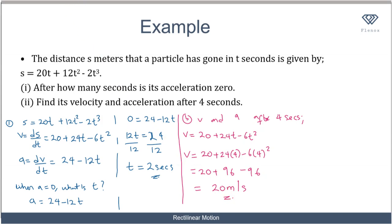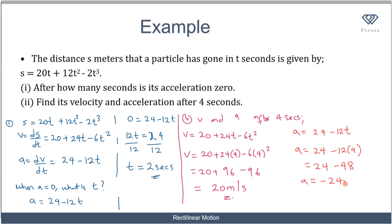Now for the acceleration after 4 seconds, using the acceleration function a = 24 - 12t, we substitute t = 4: a = 24 - 12(4) = 24 - 48 = -24 meters per second squared. The negative acceleration means the body is decelerating — the rate of change of velocity with time is decreasing.